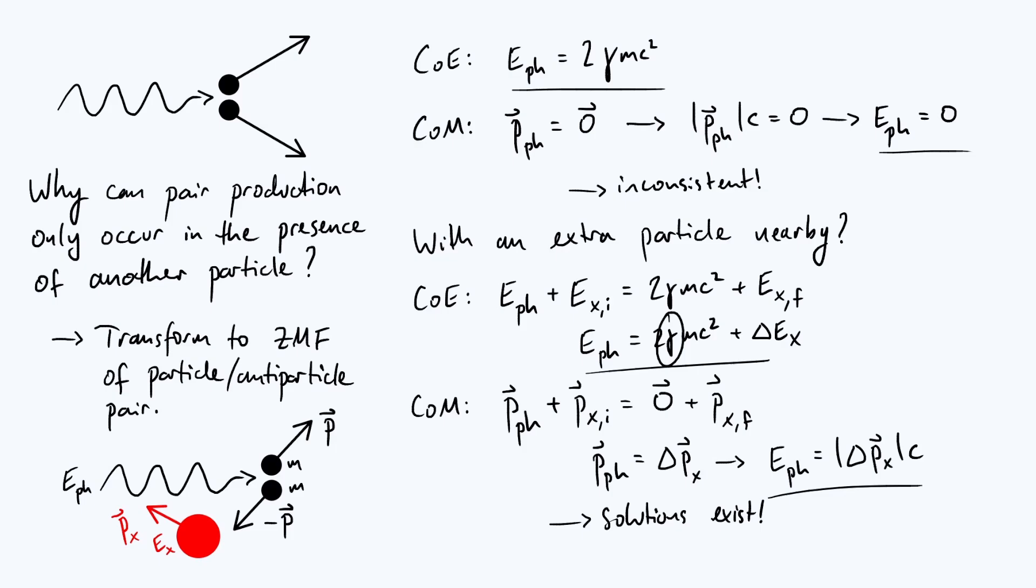Anyway, so the conclusion is basically that you need particle x around in order that it can absorb the momentum from the photon and allow momentum and energy to both be conserved. In terms of what particle x actually is, well it could really be anything. It's often a nucleus in practice.